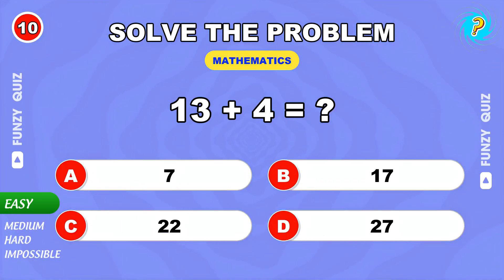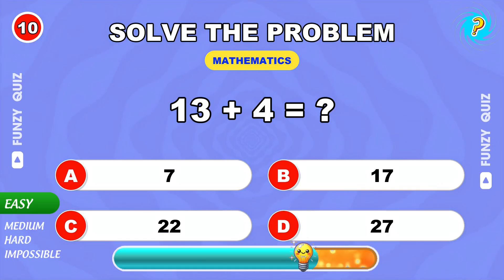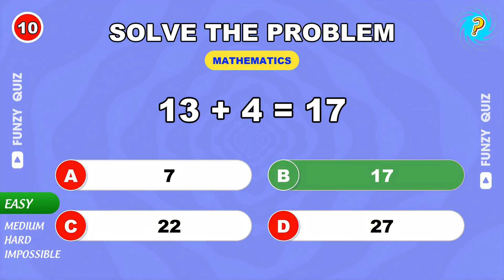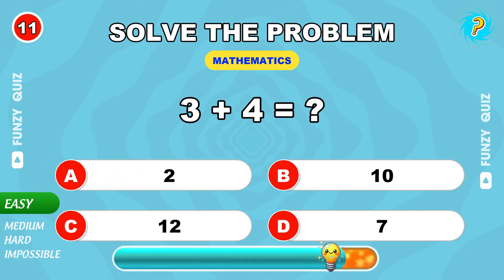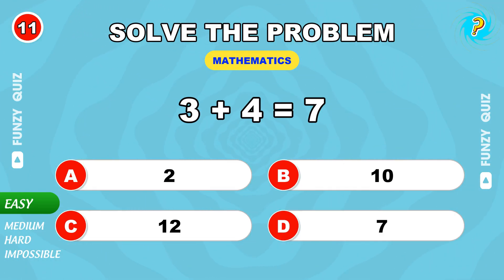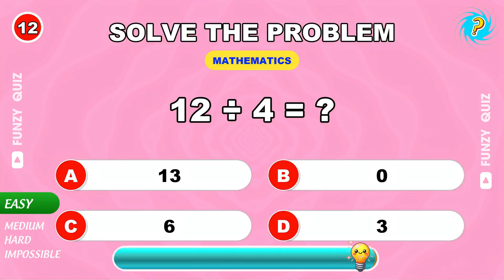13 plus 4. 17. What's 3 plus 4? That's 7. 12 divided by 4. 3.